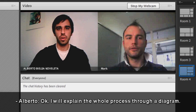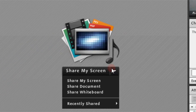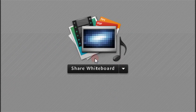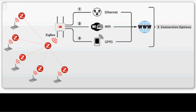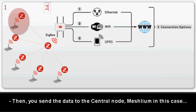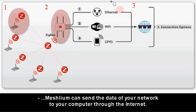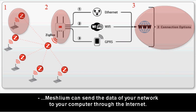I will explain the whole process through a diagram. First of all, you have to connect the sensor to WASMode and create your Zigbee network. Then, you send the data to the central node — Meshlium in this case. Meshlium can send the data of your network to your computer through the internet.